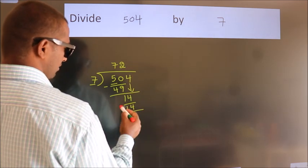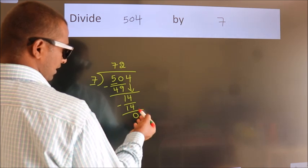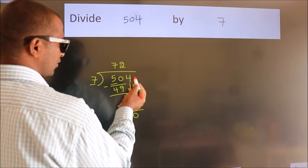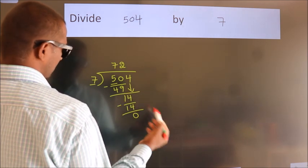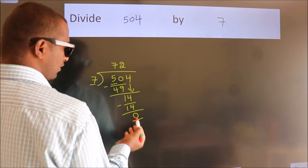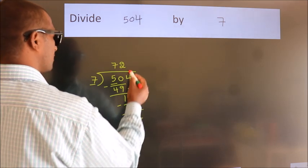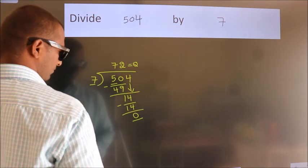Now we subtract. We get 0. After this, no more numbers to bring it down. And we got remainder 0. So this is our quotient.